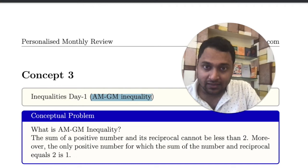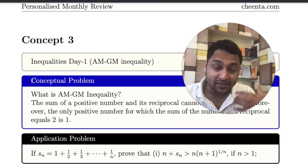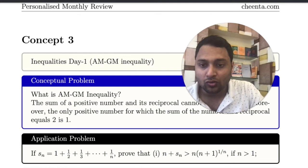Similarly, the next concept is the AM-GM inequality — the arithmetic mean geometric mean inequality. There is again a conceptual problem that the faculty is discussing with the student, and then there is an application problem, and finally a competency score is given.